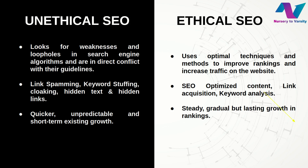Examples of unethical SEO are link spamming, keyword stuffing, cloaking, hidden text and hidden links. It majorly focuses on quicker and unpredictable results which provide short-term growth. We cannot rely on unethical SEO for long-term growth — it provides results instantly but it is not the ethical way of going.